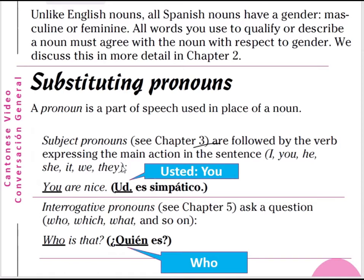The subject pronoun — we will discuss it in chapter 3. The subject pronoun is followed by the verb expressing the main action in the sentence. For example: I, you, he, she, it, we, or they. Like this example: 'you are nice' — usted es simpático. Usted means you; it is a person. If you are Tom, then Tom es simpático. Usted — the long form is U-S-T-E-D — it means you, it is formal.